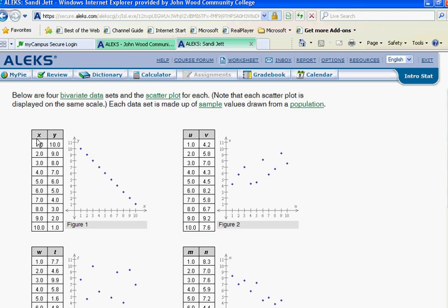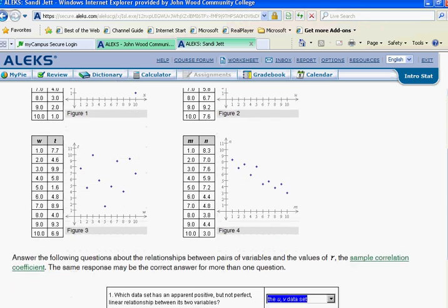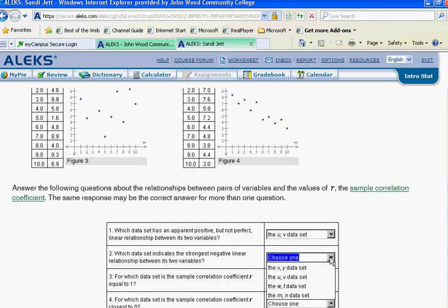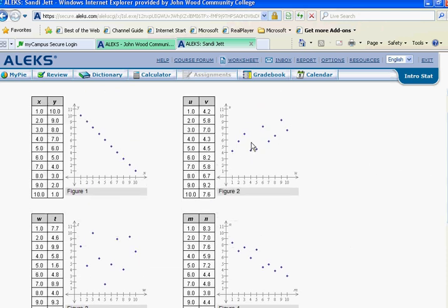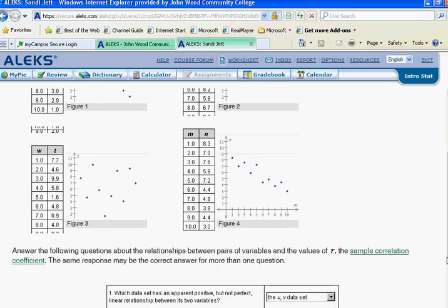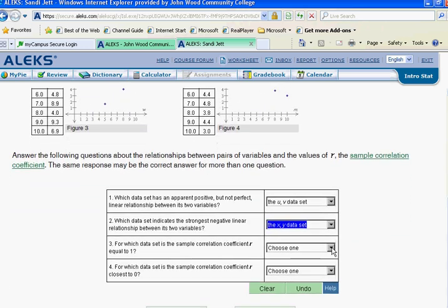Correlation XY is the answer. For which data set is the sample correlation coefficient r equal to one? That would be positive and there isn't one. So for that one, I would say none of the data sets.